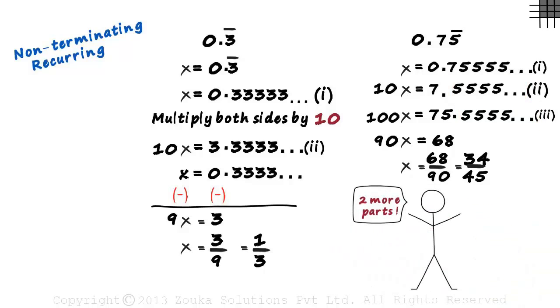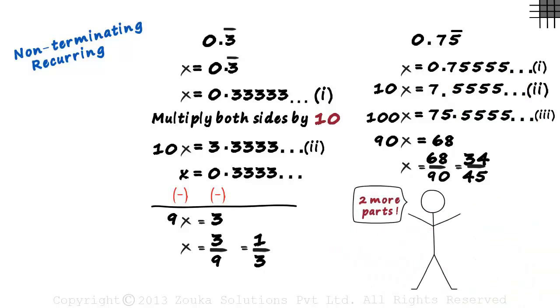There are two more parts based on conversion of non-terminating recurring decimals to the form P by Q. Make sure you watch them too.